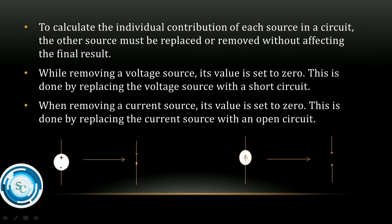This is done by replacing the voltage source with a short circuit. The internal resistance value is zero, so we will short that branch — that network, that area — we will short that branch.